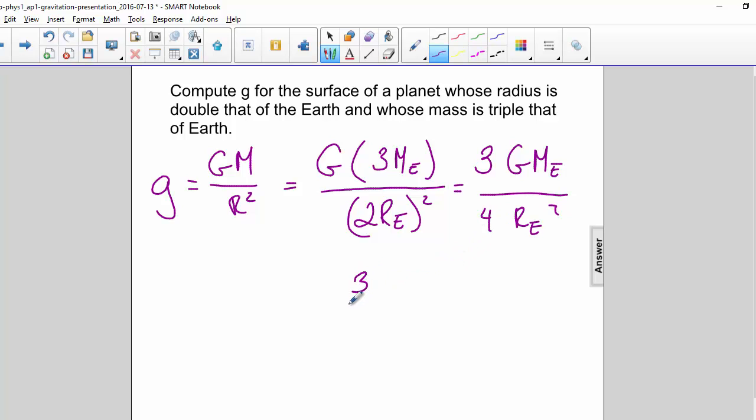So we have three-fourths, and then we know the rest of this is simply equal to 9.8. So it's three-fourths times 9.8, and that is equal to 7.32 meters per second squared.